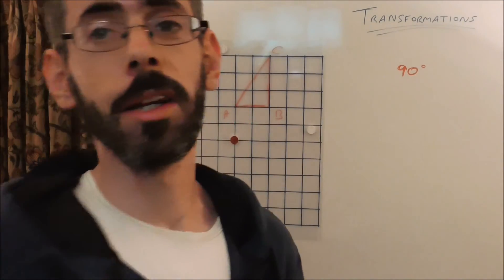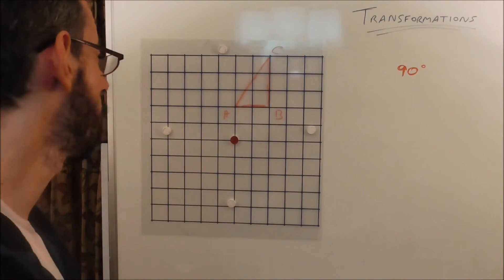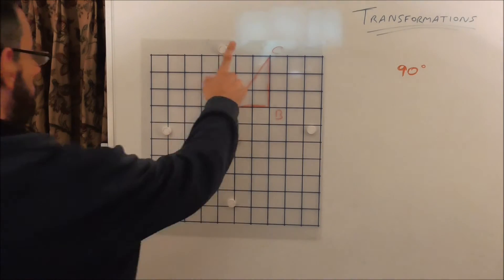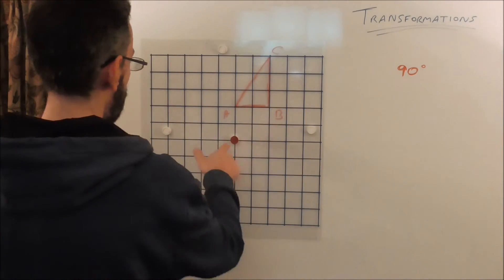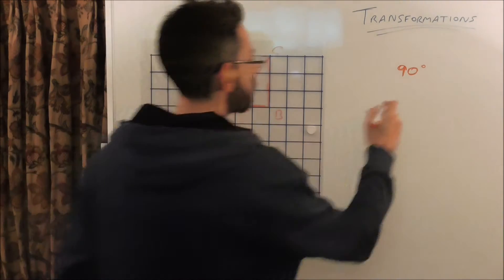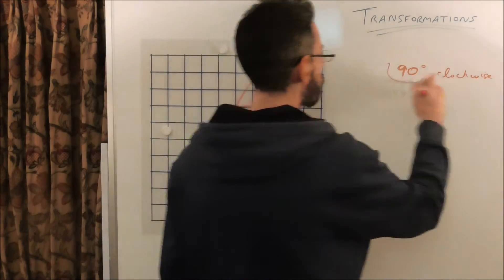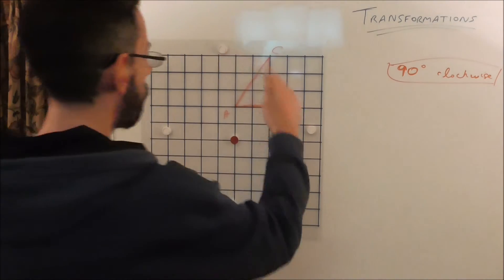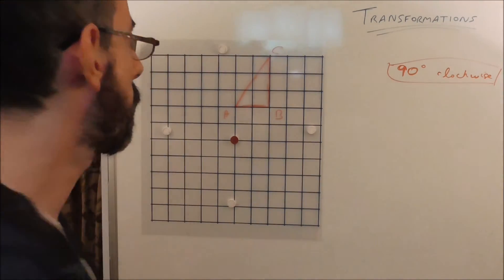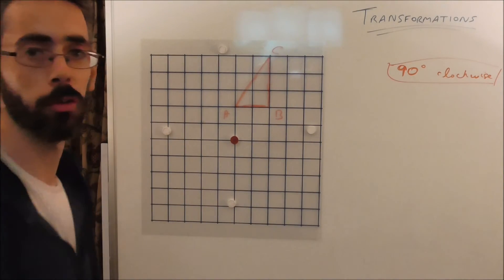Now, what about 90 degree rotations? Let's say you don't have tracing paper and you want to rotate a shape 90 degrees. There is another method — it's not as quick as the last method, but you can reliably use it to rotate any shape 90 degrees. I've drawn the original triangle. Let's say you want to rotate it 90 degrees clockwise around the centre of rotation. Basically what you do is rotate the page 90 degrees clockwise, see where the corners end up, write down where they end up, and then when you turn the page back you know where to draw the new corners.